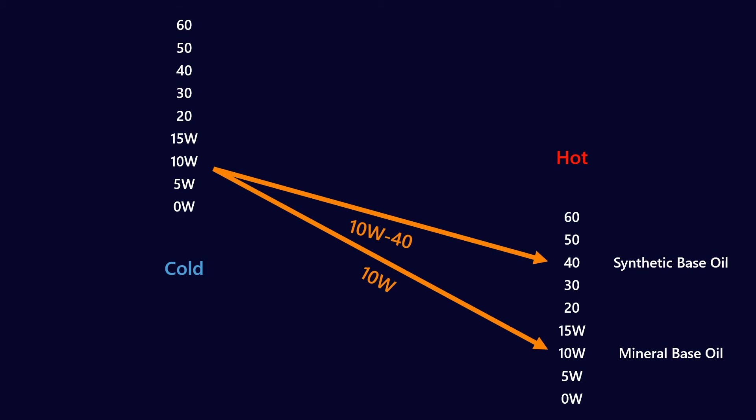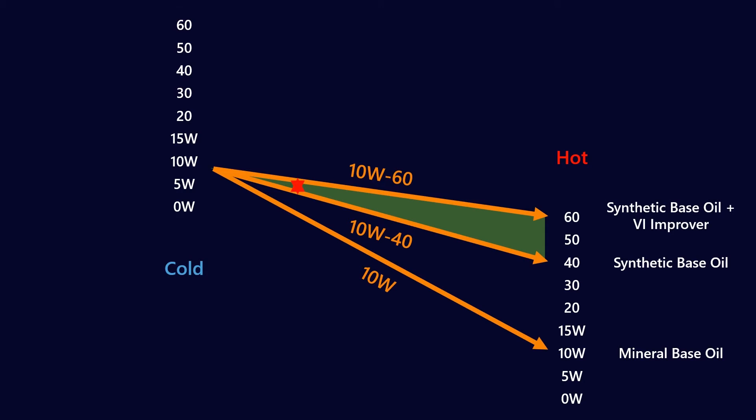Now let's go back to our discussion on VI improvers. If you took a standard mineral base oil maybe it would get you a 10W monograde but by using a synthetic base oil with a higher VI with the same cold temperature viscosity you could get a 10W-40 because it would be thicker at higher temperatures. If we wanted something above a 10W-40 we might need to add VI improvers to get to a 10W-60 and so that extra contribution is all made up by the viscosity index improvers.